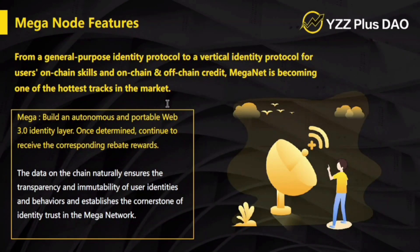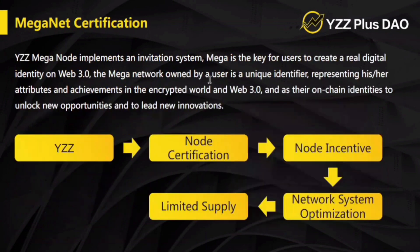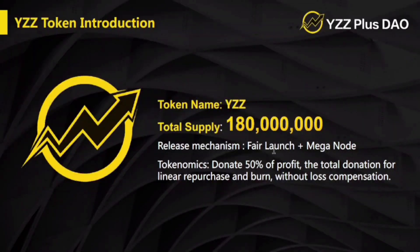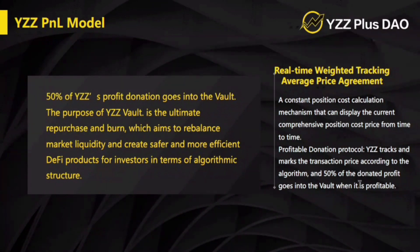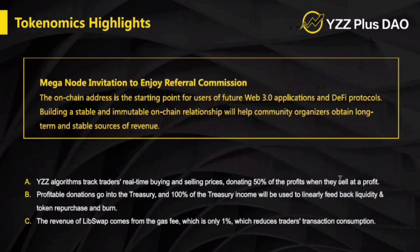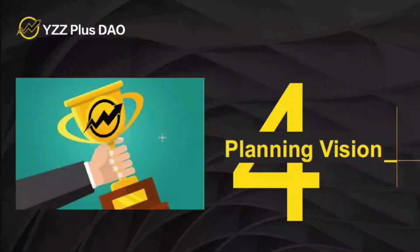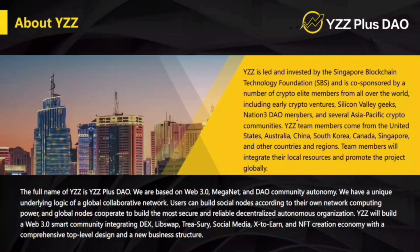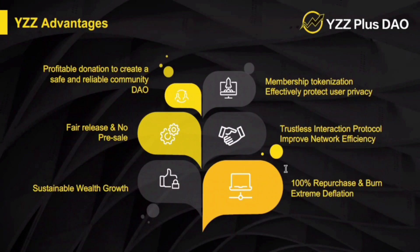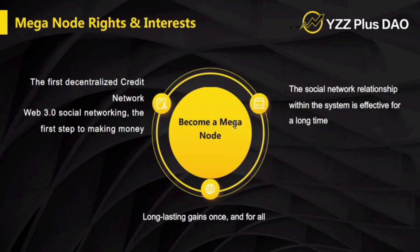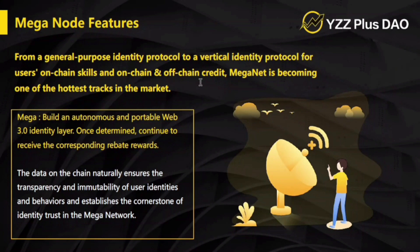Here are also some features — it is fully decentralized and is the first decentralized platform that is working. It has been built to give ownership to every user with their unique identity. Here is the total token supply and much more detail. You can find the YZZ PNL model, tokenomics, mission, visions, category activities, and their team details.